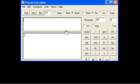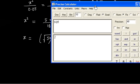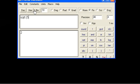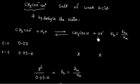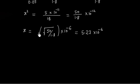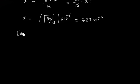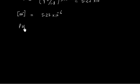So X = 5.27 × 10⁻⁶. Since X is the concentration of OH⁻, we have [OH⁻] = 5.27 × 10⁻⁶. We can now calculate pOH: pOH = −log(5.27 × 10⁻⁶) ≈ 5.27.